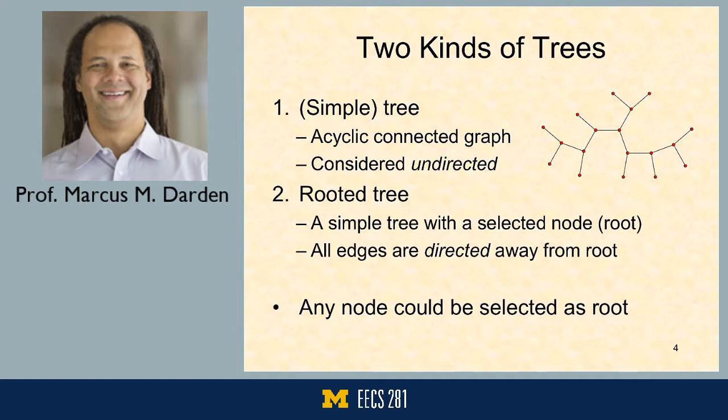One thing that's important to note is that a tree is really a graph — a particular type of graph. All trees are graphs, but not all graphs are trees, because a tree has to be acyclic, meaning there are no cycles. There's no two points that can be connected by more than one route.